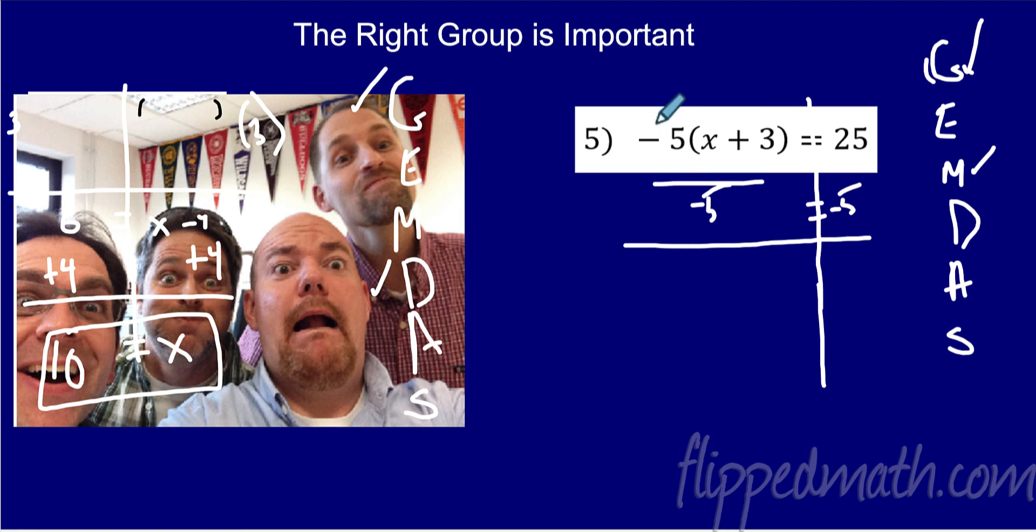And what do we get? We get x plus 3, because this whole thing here cancels, equals 25 divided by negative 5 is negative 5. Then the opposite, see, now the grouping's gone. So now I worry about that addition. The opposite of plus 3 is minus 3. So x equals negative 8.